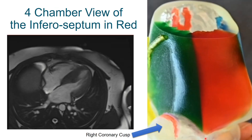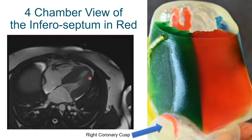The four-chamber view on echo, with the right ventricle, the left ventricle, tricuspid and mitral respectively — the septum is right here. This is predominantly what we see in red, so this is the infraseptum, and it is to the right-hand side, or from the surgeon's view, the non-coronary side of the cusp of the aorta. The membranous septum, you can see clearly here, would be sitting right there.